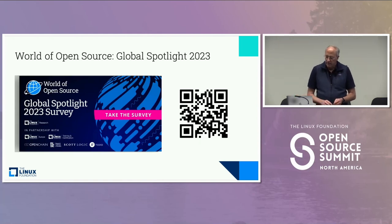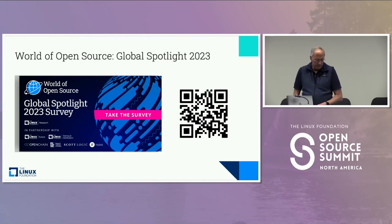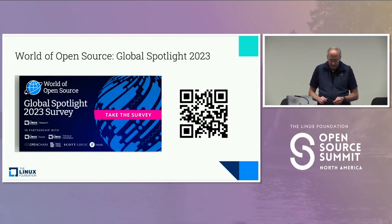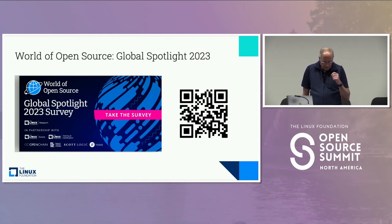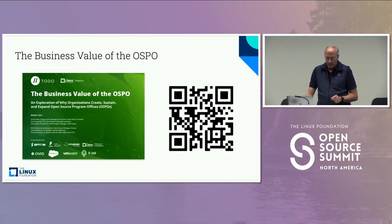Then we have another survey that went out in April and is being discussed here at this event — our Global Spotlight: World of Open Source. This is a worldwide study — most of ours are. It's really fabulous because it covers how organizations are using open source, how they're contributing to open source, what kinds of open source they use from a technology standpoint, and the value of open source to their organization — a really cool set of questions.